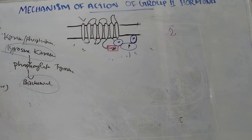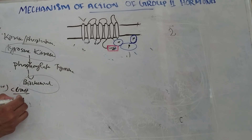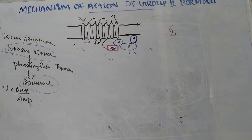The fourth type: the second messenger is cyclic GMP — for example, atrial natriuretic peptide. That covers the mechanism of action of Group 2 hormones. Thank you for watching.